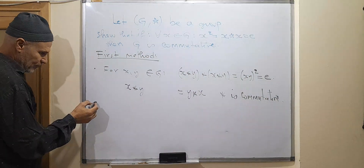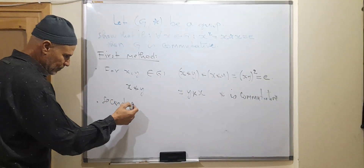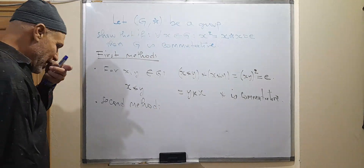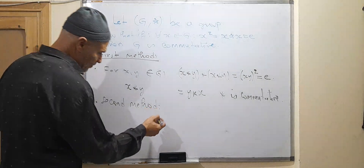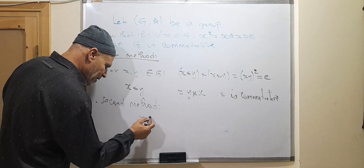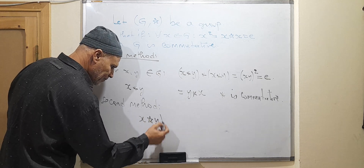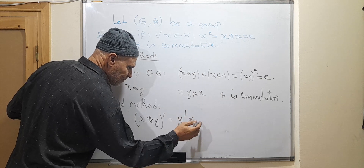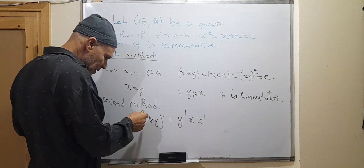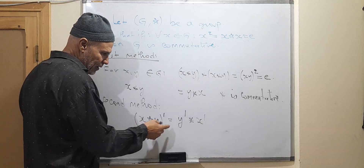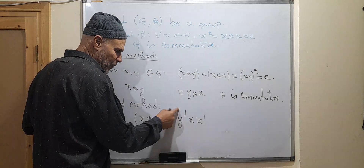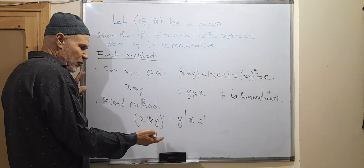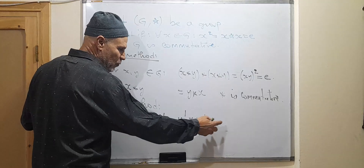Second method. We know that the inverse element of x star y is equal to the inverse element of y composed with the inverse element of x. How can we prove this? It is very easy: we compose with y x on both sides, then drop x with x⁻¹ and x with x.